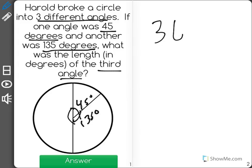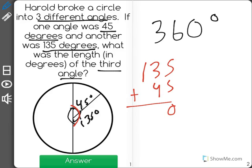Well, we know in a circle, when you add up all the angles, it equals 360 degrees. So let's find out how much is represented by 45 plus 135. 135 plus 45 is equal to 180 degrees.